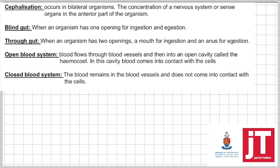Cephalization is a very important term. It occurs only in bilateral organisms — organisms that have a definite head and tail. And this is the concentration of a nervous system or sense organs in the anterior, or the front part, of an organism.